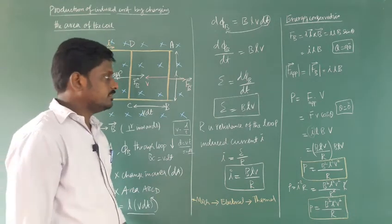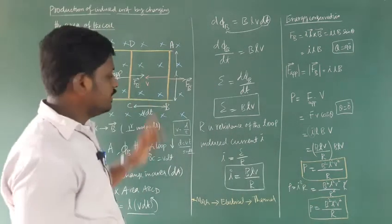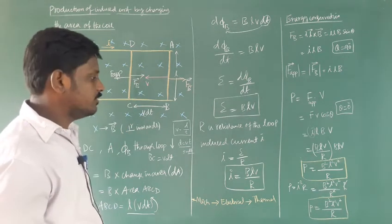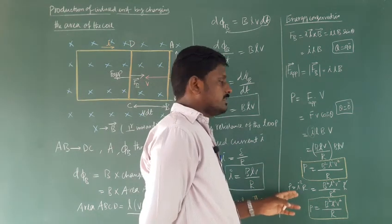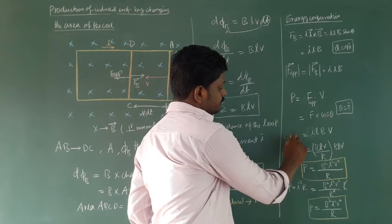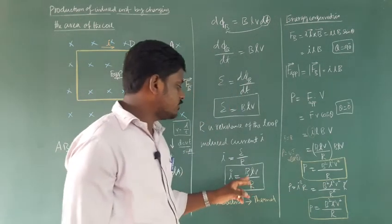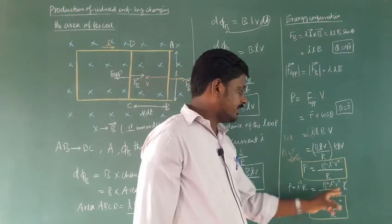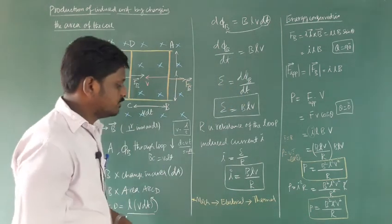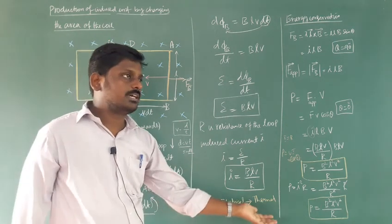We are applying mechanical energy to move the rod, and that mechanical energy is converted into electrical energy — there is a current flow. Due to the current flow in rod AB, there is a Joule heating effect. The rate of heat dissipated in the circuit: power equals voltage into current. Since V equals IR, power equals I²R. Substituting I equals BLV/R, we get I² equals B²L²V²/R², and multiplying by R gives power equals B²L²V²/R. Both the mechanical power and heat dissipation power are the same — mechanical energy is converted into electrical energy, and then electrical energy is converted into thermal energy as heat.